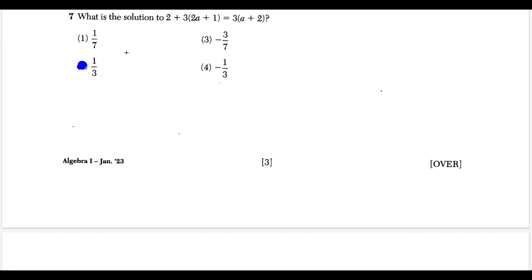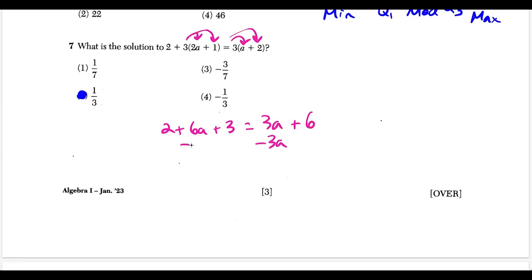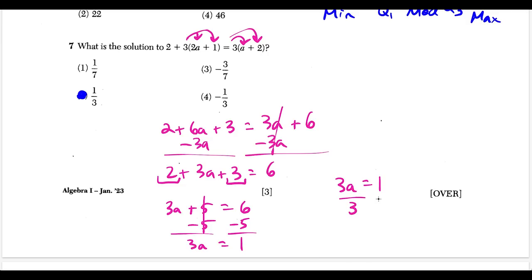Now let's solve algebraically. Distributing: two plus six a plus three equals three a plus six. Subtract three a from both sides: two plus three a plus three equals six. Combining like terms: three a plus five equals six. Subtract five from both sides: three a equals one. Divide both sides by three and you get a equals one over three. Choice two is definitely correct.